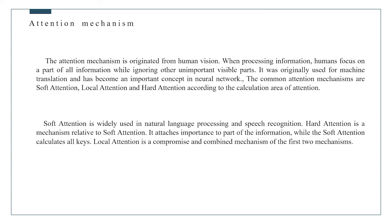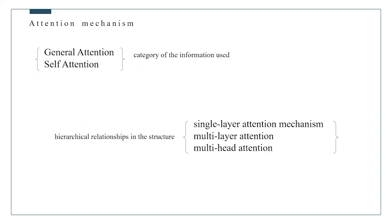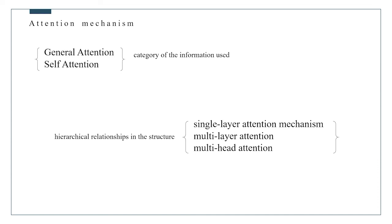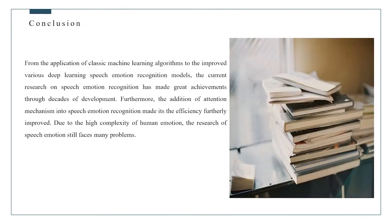This article describes five aspects of speech emotion recognition: the development of speech emotion recognition, emotion description models, emotion speech databases, feature extraction, and emotion recognition algorithms. Due to the high complexity of human emotions, research on speech emotions still faces many challenges, including under-researched complex emotional states. Overall, there are bright perspectives in speech emotion recognition. That's all for my presentation. Thank you.